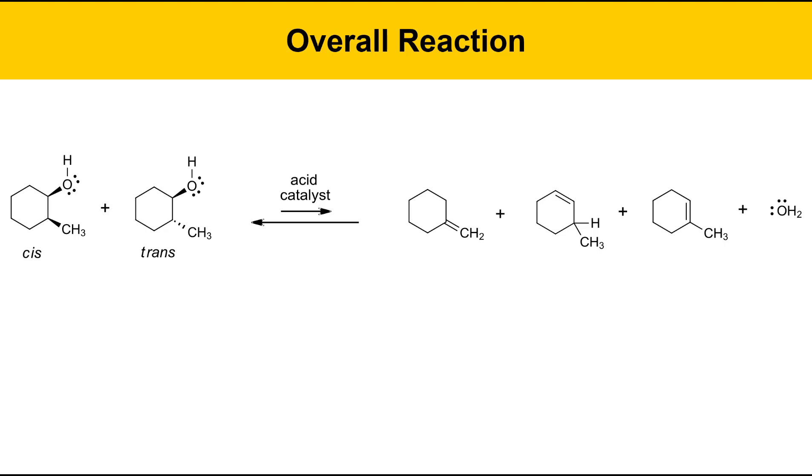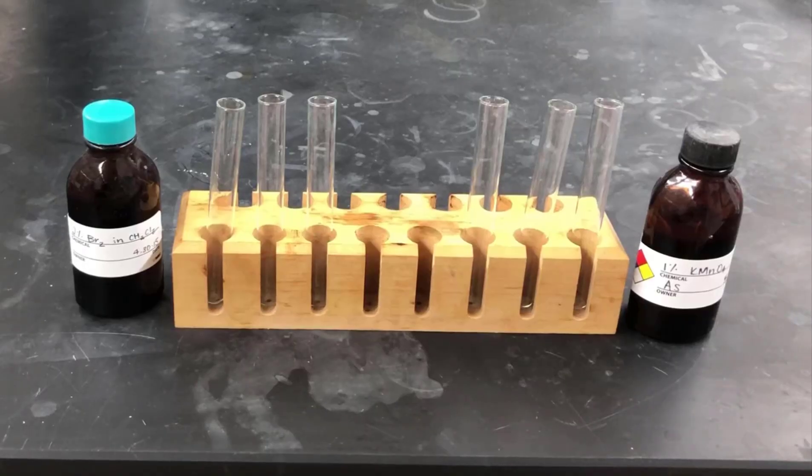The reaction mixture contains potentially 5 different products, the 2 alcohol starting materials and the 3 potential alkene products. Water was removed in a previous step with magnesium sulfate. To characterize our reaction mixture, we're going to do a series of color tests. In these tests, we'll look for the presence of an alkene functional group, a carbon-carbon double bond, using a color change reaction.